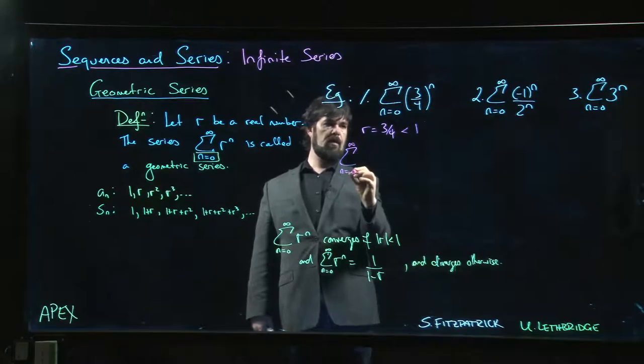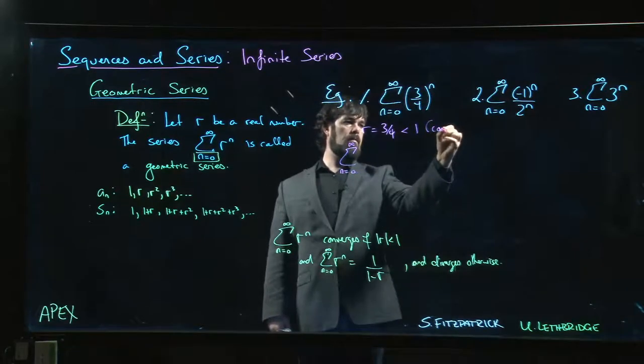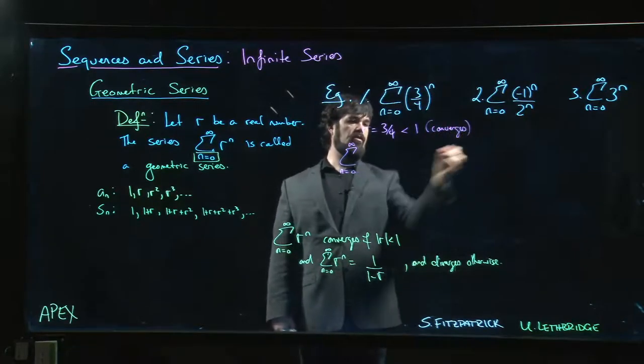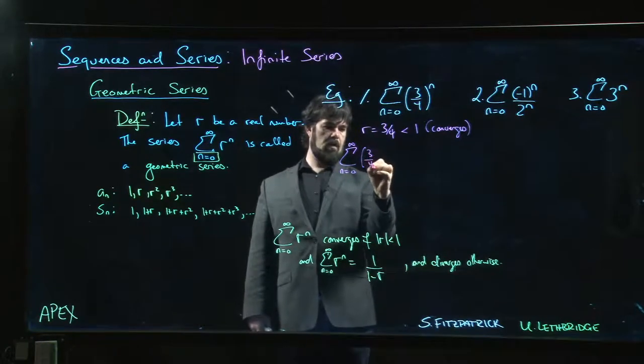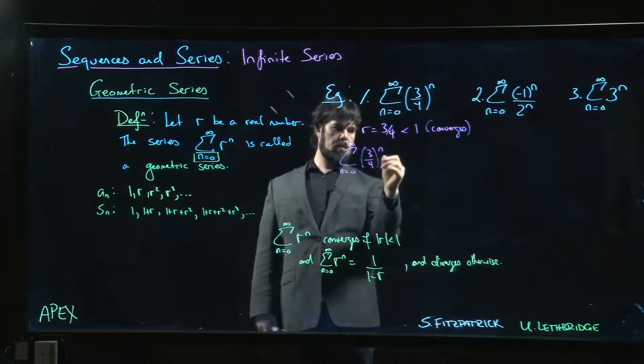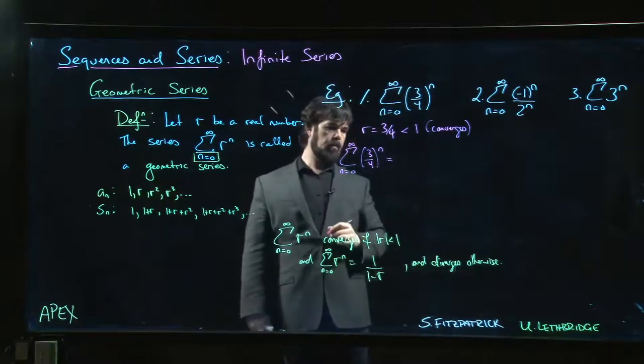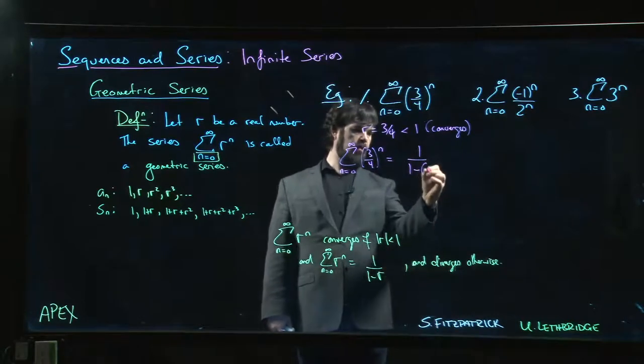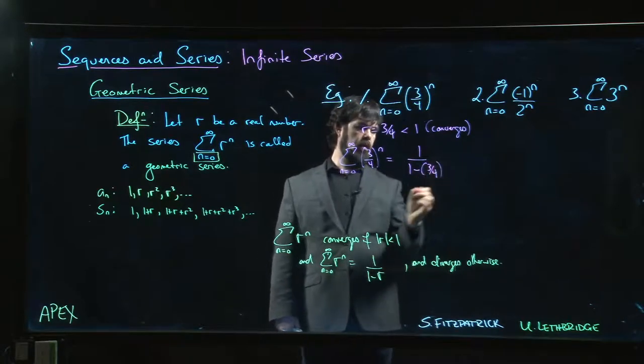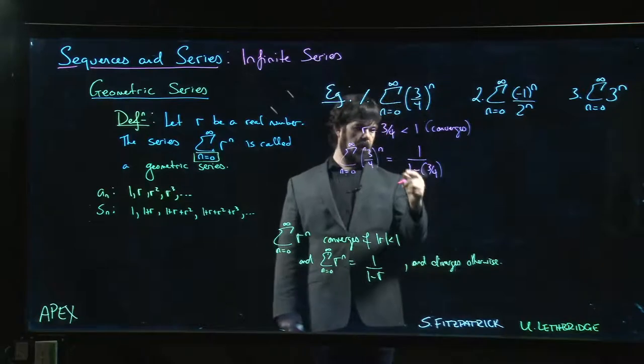And we know what it converges to. The sum going from zero to infinity converges, so let's figure that out. Three over four to the n is going to converge to one over one minus r, where r is three quarters.